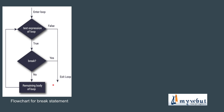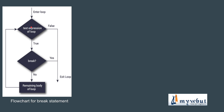This is the flowchart for a break statement. The control of the program enters the loop. There is the test expression of the loop. If the test expression turns out to be false, the program will automatically exit from the loop. If the test expression is true, it will check whether there is any break statement. If a break statement is encountered, immediately the loop will be exited. Otherwise, the remaining body of the loop continues to execute, and then control shifts back to the test expression.